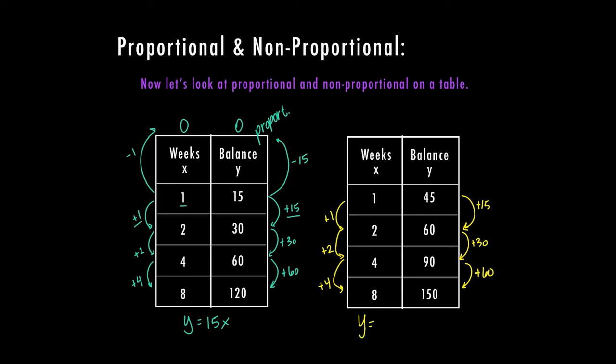So again, this one, my k or my m, my constant rate of change is 15. But now I have to see if this goes through zero, zero. So again, I need to get up to zero, zero. So I'm going to subtract one, which means on the y value, I'm going to subtract 15. These have to be opposite. 45 minus 15 is 30. So this one has an add on of 30, which means this one is non proportional.